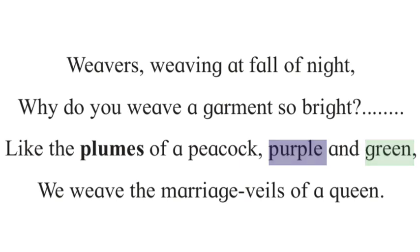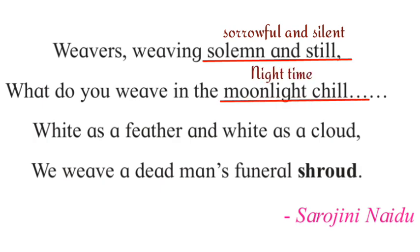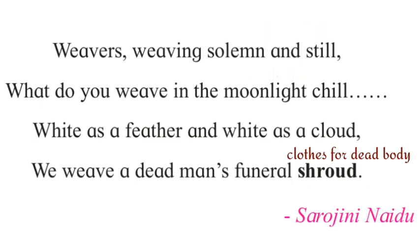Stanza 3: 'Weavers, weaving solemn and still, / What do you weave in the moonlight chill? / White as a feather and white as a cloud, / We weave a dead man's funeral shroud.' In this last stanza the poet finds the weavers solemn and still — sorrowful and silent — weaving something in the moonlight chill that is white as a feather and white as a cloud: colorless and lifeless. The weavers reply they are weaving a shroud — a cloth put on the dead body — representing the third and final stage: death, which is emotionless and lifeless.